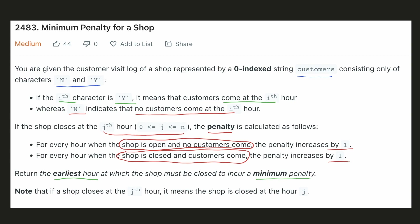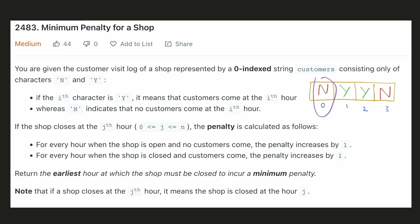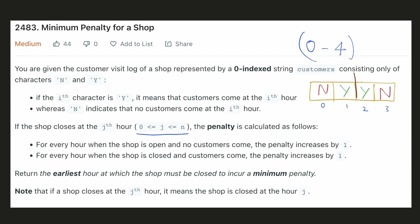Let's understand this question with an example. No customer comes at the zeroth hour. The shop can close at any hour from 0 till 4. If the shop closes at the zeroth hour, then for all these hours there will be no activity, and in this case the shop will be missing out on 2 hours when customers come — hence the penalty would be 2. If the shop closes at the second hour, there will be no activity for hours 2 and 3. We will be opening the shop at the zeroth hour when no customer comes, and missing out on serving customers at the second hour, so the penalty will be 2.